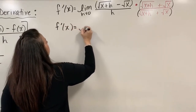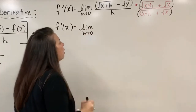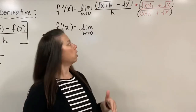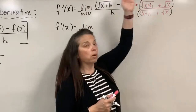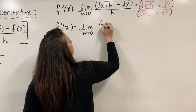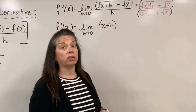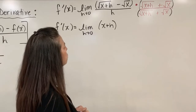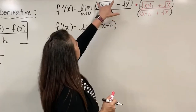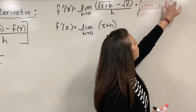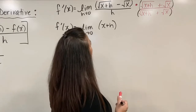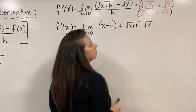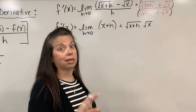We have f prime of x is equal to the limit as h approaches zero. Now I'm going to have square root of x plus h times itself when I distribute. The square root and square root cancel, and what's left is just x plus h from the first part of my FOIL. So I have x plus h in parentheses. Then I take square root of x plus h and multiply it by square root of x, giving me plus square root of x plus h times square root of x.